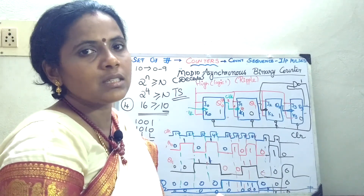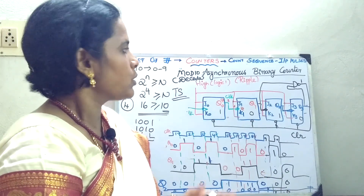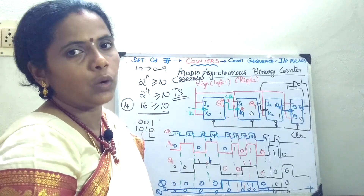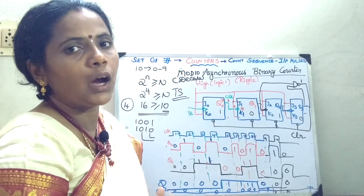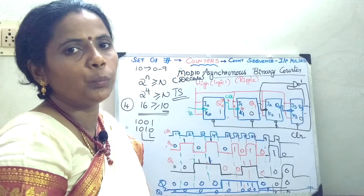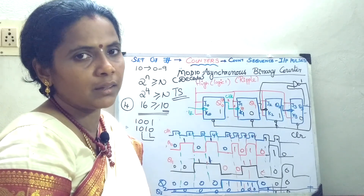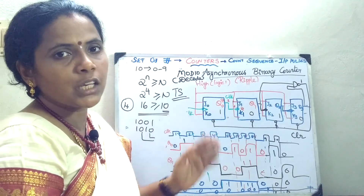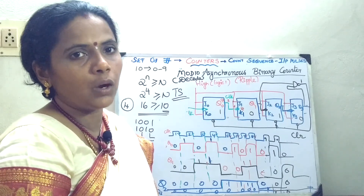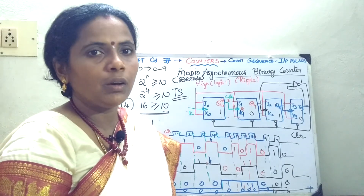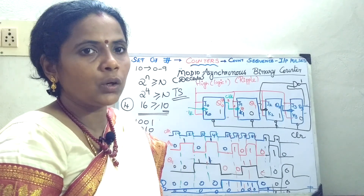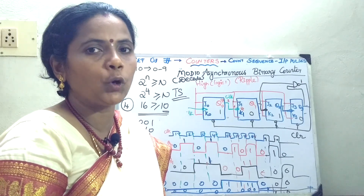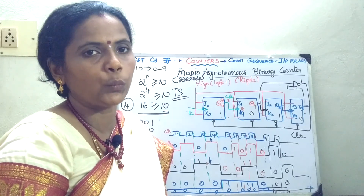With this I conclude. In this section, we have seen what is a counter, its classification, how to draw the 2-bit, 3-bit, and 4-bit asynchronous counter, as well as the truncated sequence mod-10 or decade counter. In the next session, we will be seeing about the synchronous counters. Thank you.